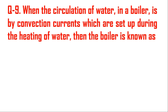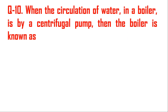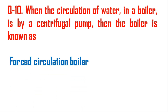Question number nine: when the circulation of water in a boiler is by convection currents set up during the heating of water, the boiler is known as a natural circulation boiler. In natural circulation, water circulation is due to density difference. In fluid mechanics, natural convection heat transfer is due to density difference, while in forced convection a pump is used. When the circulation of water in a boiler is by centrifugal pump, the boiler is known as a forced circulation boiler.